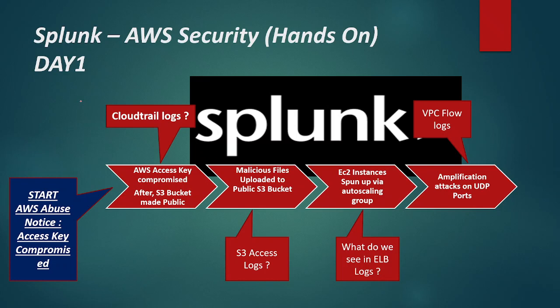Just to briefly cover the scenario: this is day one, and we will only be covering what we can find with respect to CloudTrail logs. The scenario starts — we basically received an AWS abuse notice from Amazon Web Services that your AWS access key is compromised. Somebody basically published the AWS access key on a public GitHub repository. This is how the scenario starts.